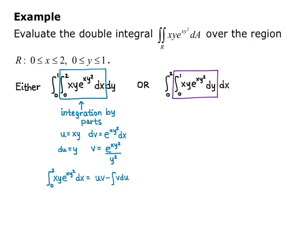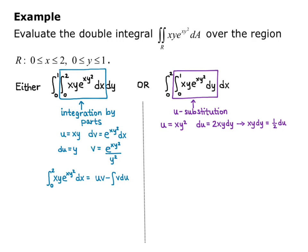On the other hand, with the inner integral from 0 to 1 of xy·e^(xy²) dy, now y is the variable and x is a constant. The term xy is actually the derivative — up to a constant multiple — of xy², our exponent. So we can use u-substitution: let u = xy², then du = 2xy dy, which means xy dy = (1/2) du.